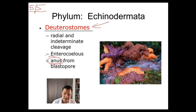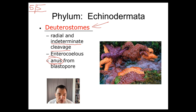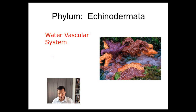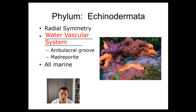Echinoderms are radially symmetrical, like a tire or a wheel, and they have indeterminate cleavage, which allows things like stem cell research in our case — those cells can become other things. The coelom develops via enterocoelous development, so it forms as little pockets rather than splitting the mesoderm; the mesoderm forms from little pockets that arise out of the animal during the gastrula stage. They also have a water vascular system and an ambulacral groove, which is like a channel through which the water vascular system runs.